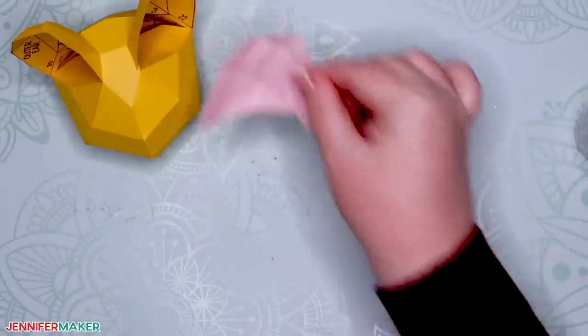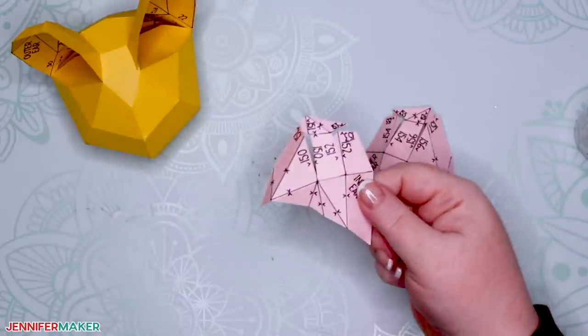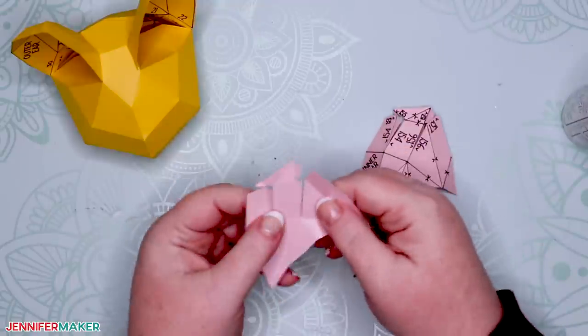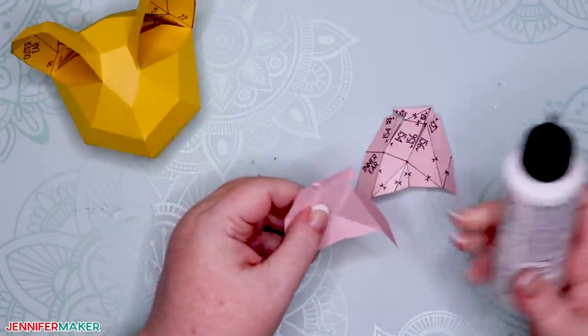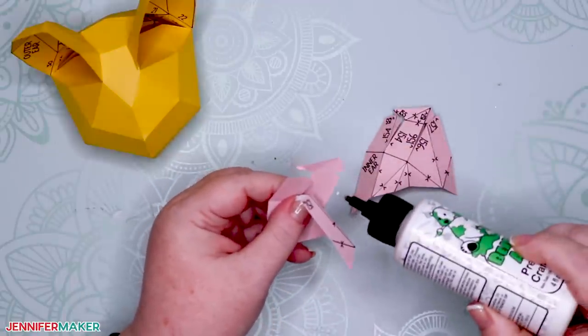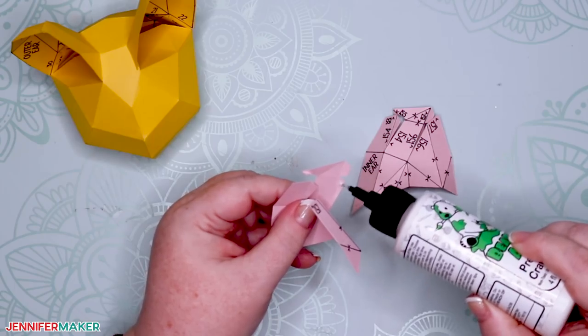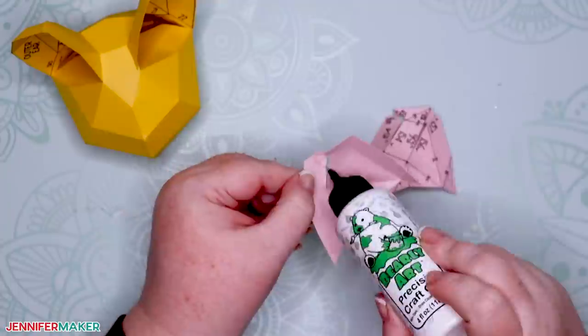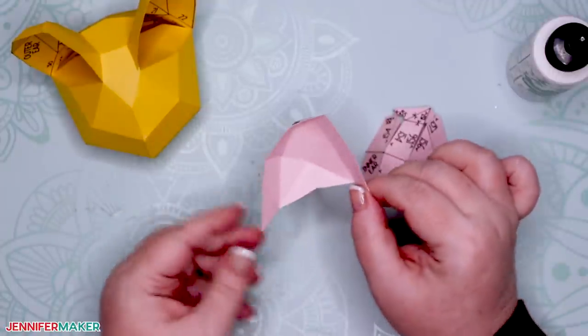There are two inner ear pieces. Glue them into their shapes first. And remember that the inner ear has the symbols that point toward each other, which means you need to both fold and glue it in the opposite direction.